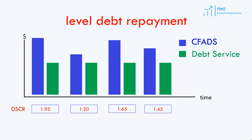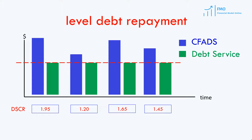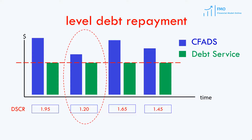This happened in our model because our model CFADs vary. However, debt repayment is happening in equal installments in each period. Therefore, the DSCR that we are getting in the model is variable. In some periods, the DSCR generated by the project is significantly higher than the required DSCR, and in other periods, it is significantly lower.